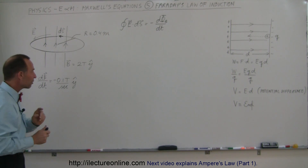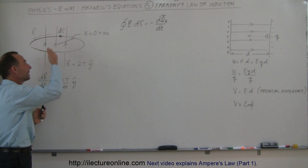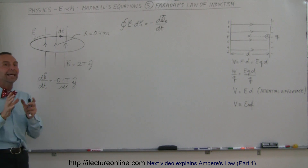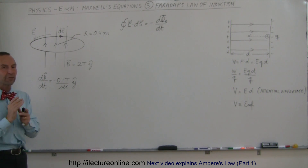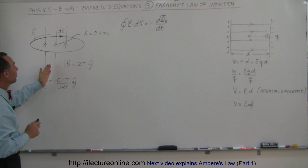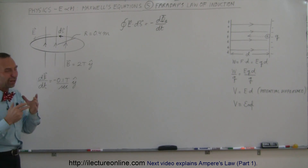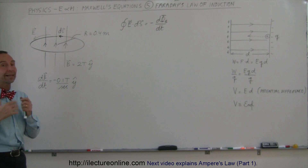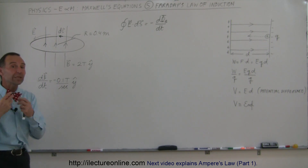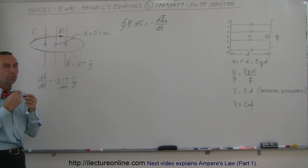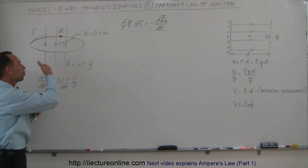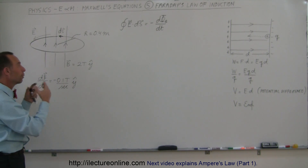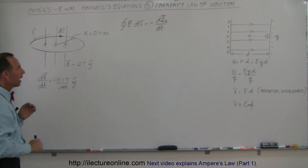But once the field begins to change — if the field increases or decreases such that the magnetic flux through the loop changes — then something begins to happen. That's the concept of Faraday's Law. Faraday's Law says that if the magnetic flux through the loop changes, that will cause an EMF to be induced. Lenz's Law then says that induced EMF will cause a current in the loop, which sets up a magnetic field trying to oppose the original change.